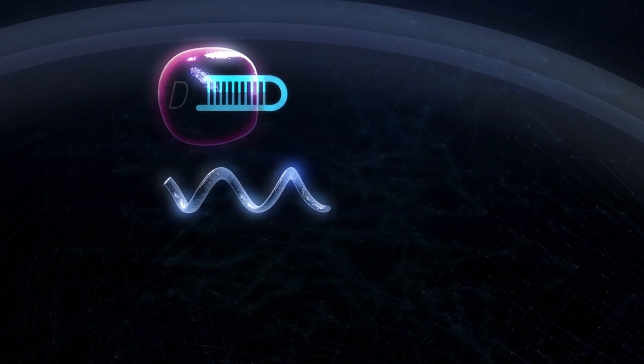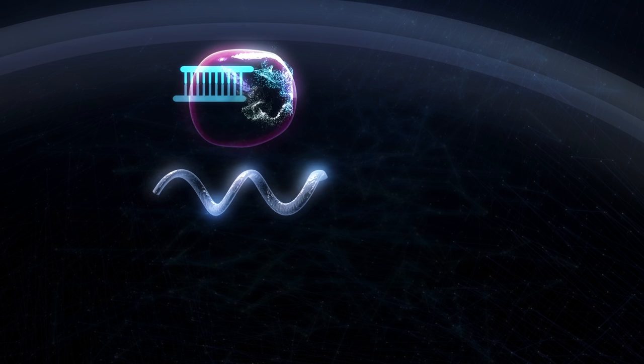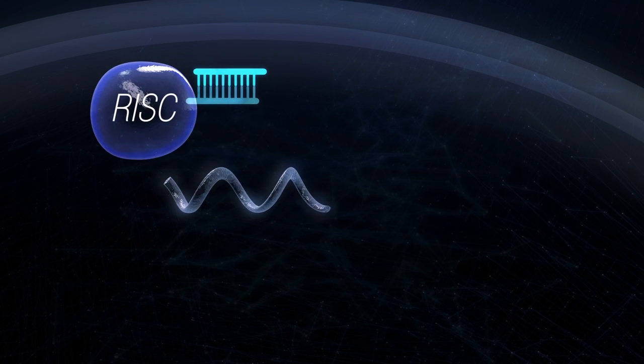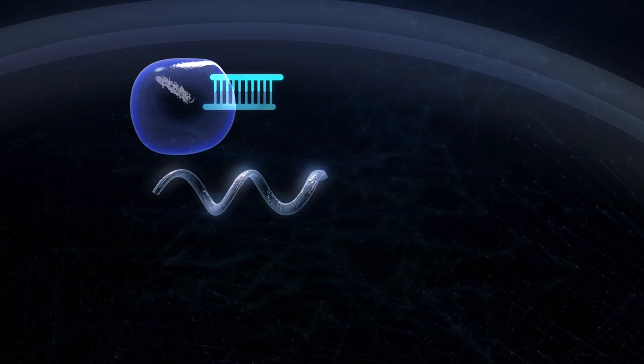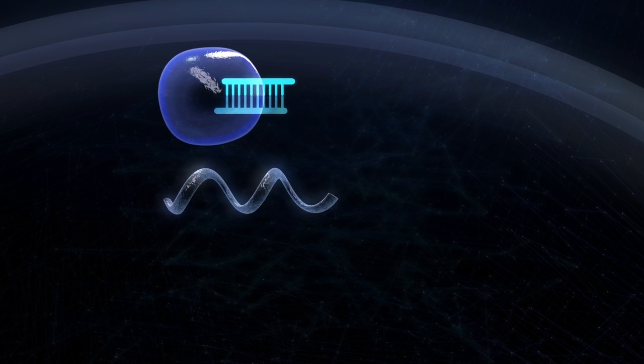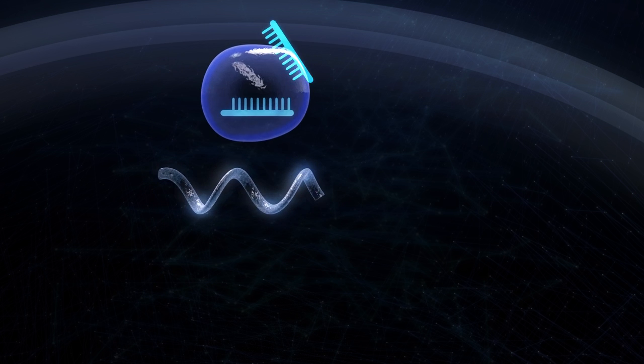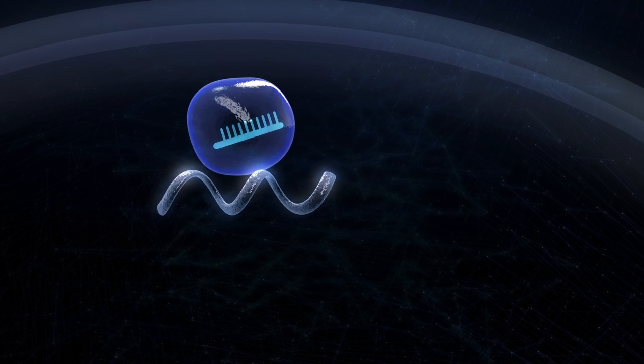Where an enzyme, Dicer, chops off the loop. This converts the shRNA molecule into an siRNA molecule. The process from shRNA production to mRNA cleavage continues indefinitely for the life of the cell.